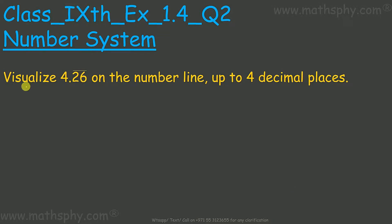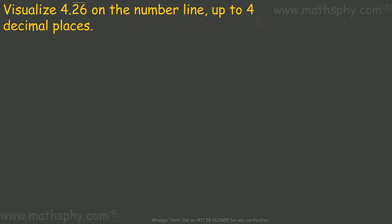This one, visualize 4.26 repeating decimal on the number line up to 4 decimal places. So this 4.26 with line on top can be written as 4.2626 up to 4 decimals and then I can put dots here.